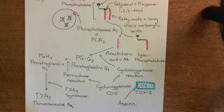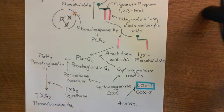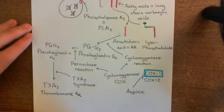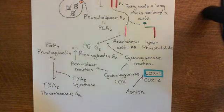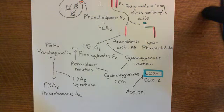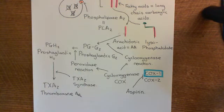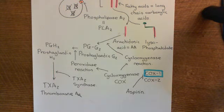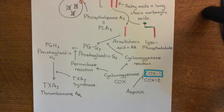Thromboxane A2 was utterly essential for causing vasoconstriction and for activating the GP2B-3A protein so that platelets can become sticky. Without it, you inhibit the hemostatic pathway. If aspirin is taken on a regular basis — taken orally and daily — it continuously inhibits new platelets that have been formed, stopping them from producing thromboxane A2. Aspirin won't stop coagulation, but if fibrin doesn't have any platelets to intertwine, you won't form a thrombus. So this is a powerful antithrombotic drug.